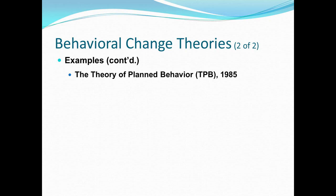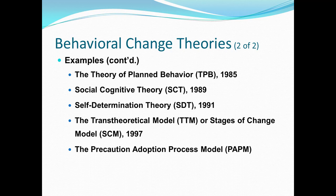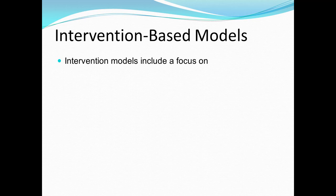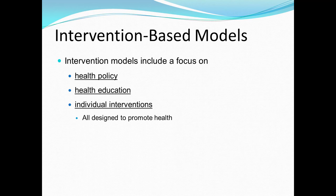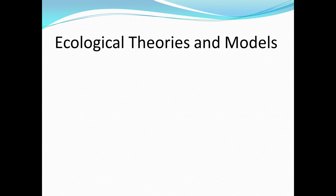Continuing with behavioral change theories, other examples include the theory of planned behavior, the social cognitive theory, self-determination theory, the trans-theoretical model or stages of change model, the precaution adoption process model, and the primary socialization theory. Intervention-based models focus on health policy, health education, and individual interventions — all designed to promote health. Examples include the Tannehill model and the behavioral change wheel.